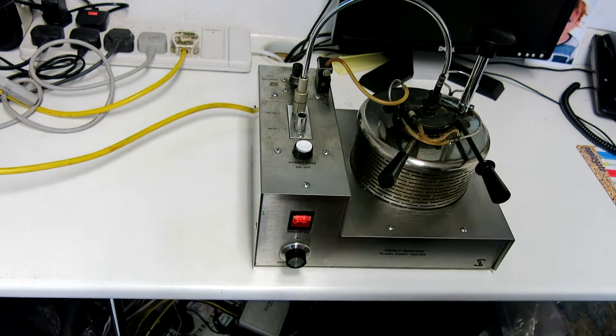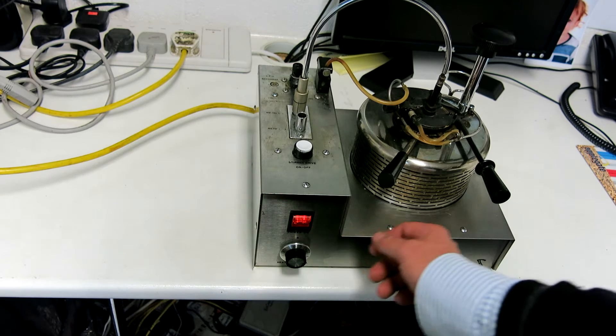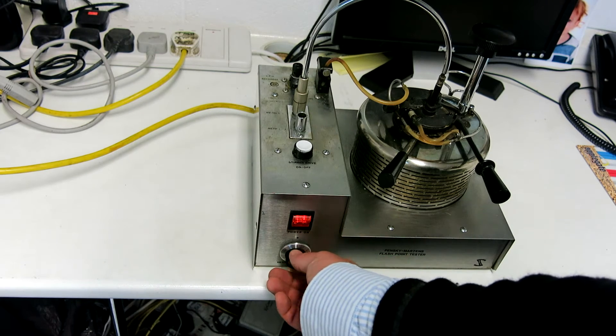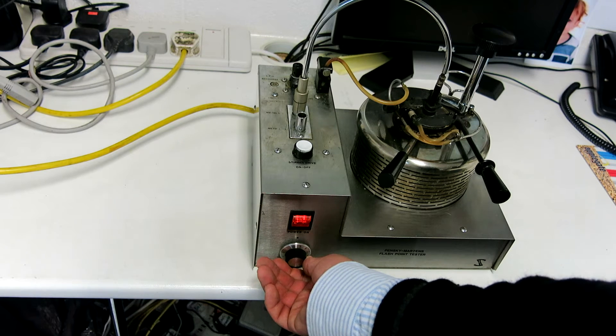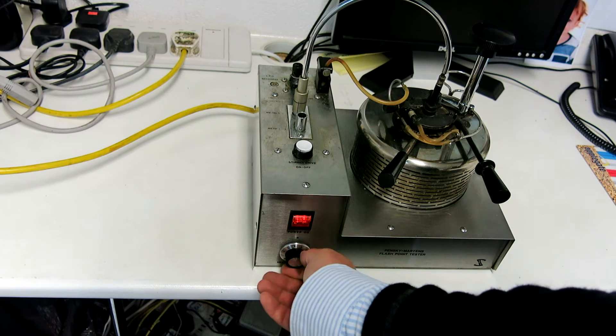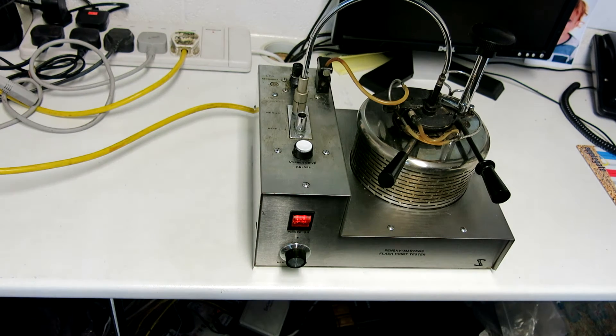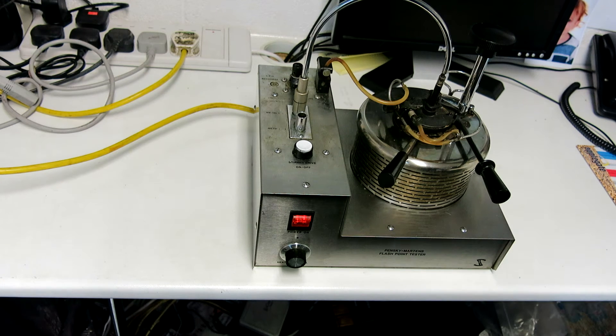We've got a heated control at the bottom here which heats the jacket that the pot goes into. So that's variable there and you can see that it's variable. Condition of it doesn't look like it's had a massive amount of use to me. It's made by CETA, a well-known manufacturer of this sort of equipment.